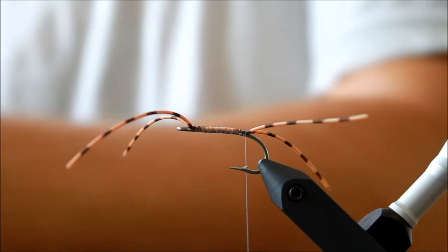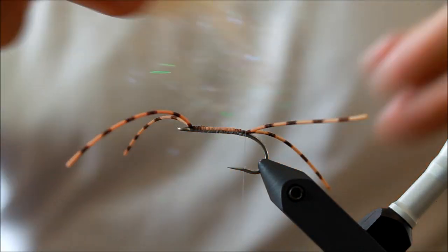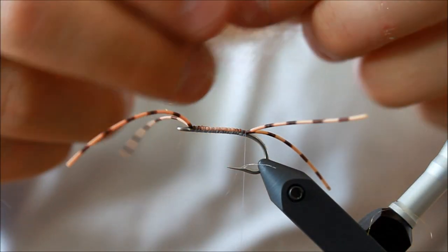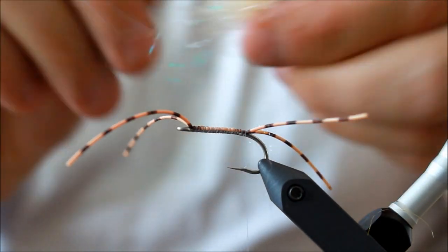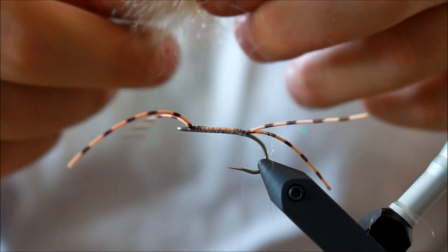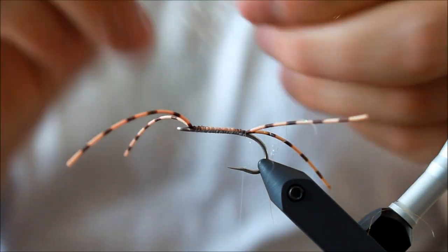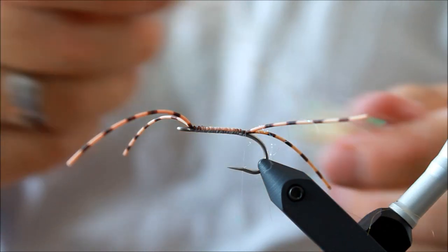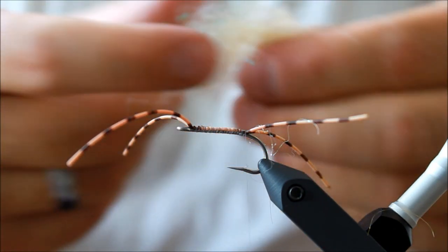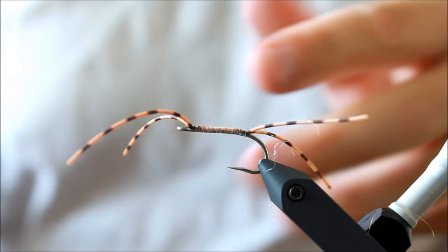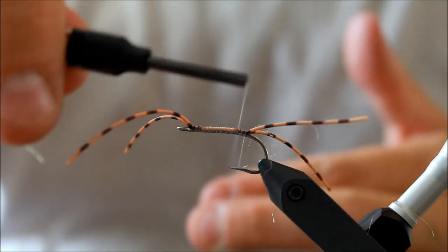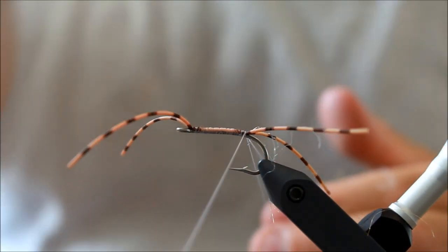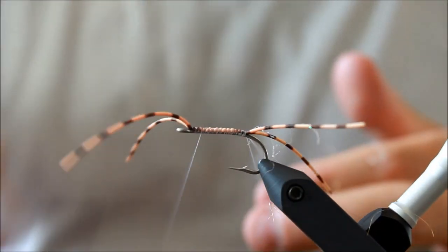Then I'm going to take some of this Glisten Glow in Tan and mix it up with the sand-colored SLF. What I'm doing is basically just taking the two dubbings, laying them on top of one another, and pulling them apart, turning things over, pulling them apart, turning things over, and just mixing it up. So I get these tan flash strands from the Glisten Glow mixed into my SLF dubbing, just to add a bit more excitement. Going to make a small dubbing loop. Taking my thread forward.